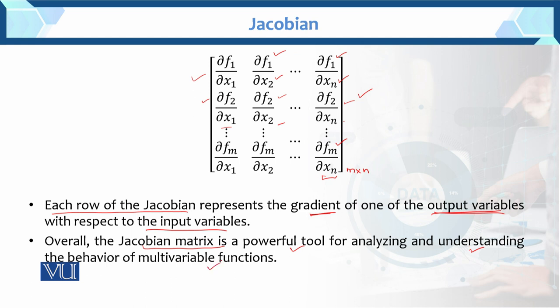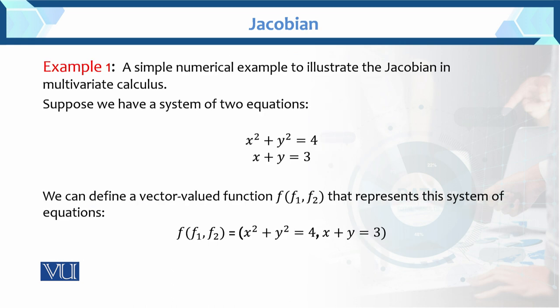Abhi haamare paas ek variable nahi, multi-variable hain — ten variables hain. Unka haam partial derivative le rahe hai. Isko example se hum understand karte hain ki Jacobian kya hai basically. Here is example one: a simple numerical example to illustrate the Jacobian in multi-variate calculus. Multi-variate kaab hota hai jab two or more than two variables hum use karte hain.